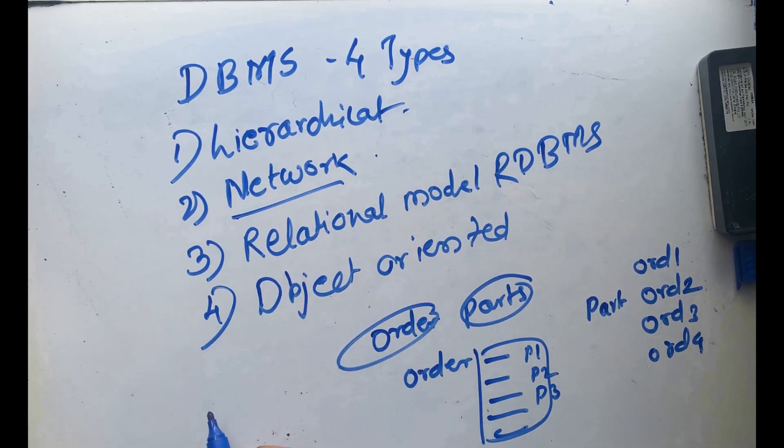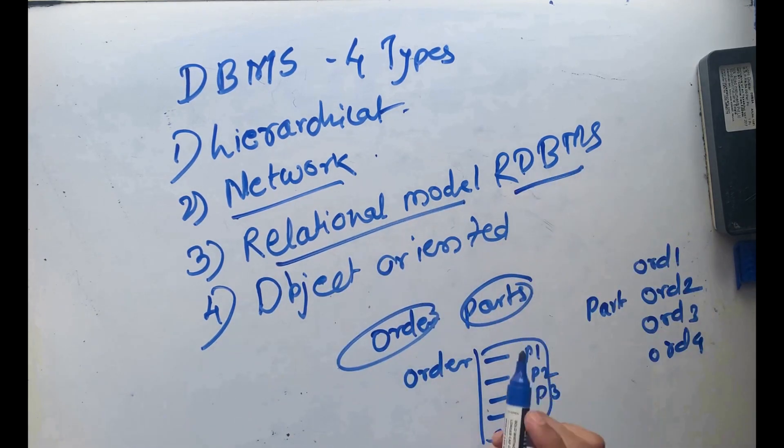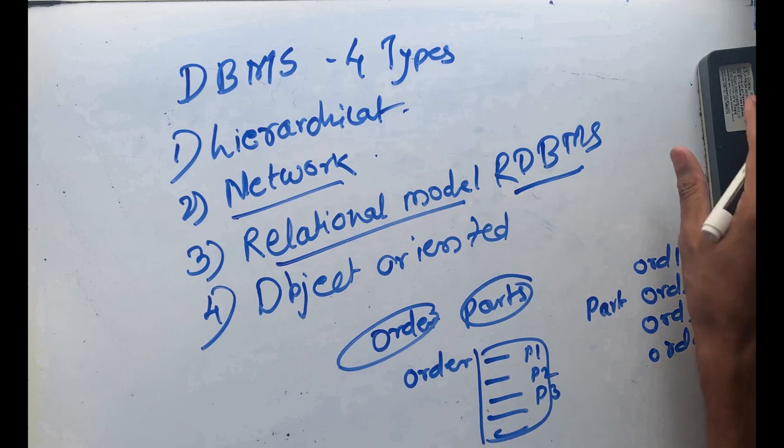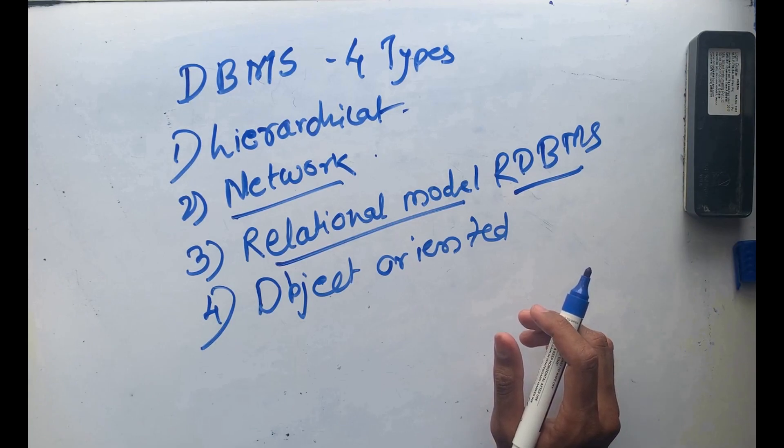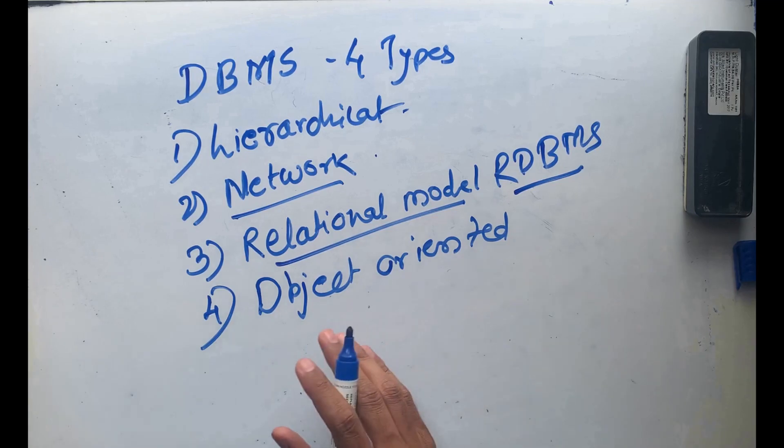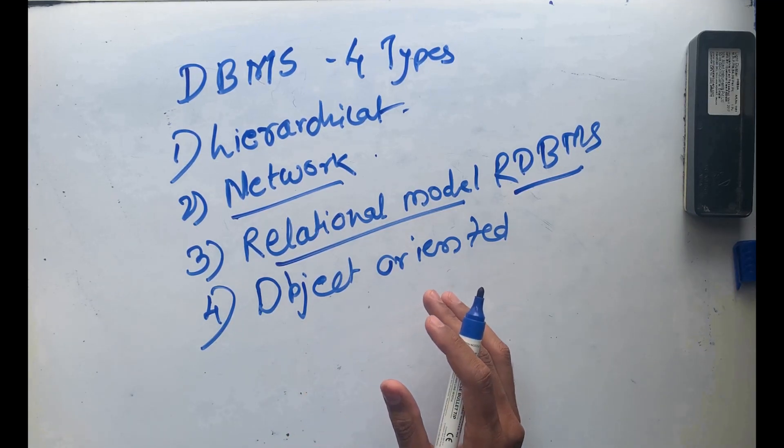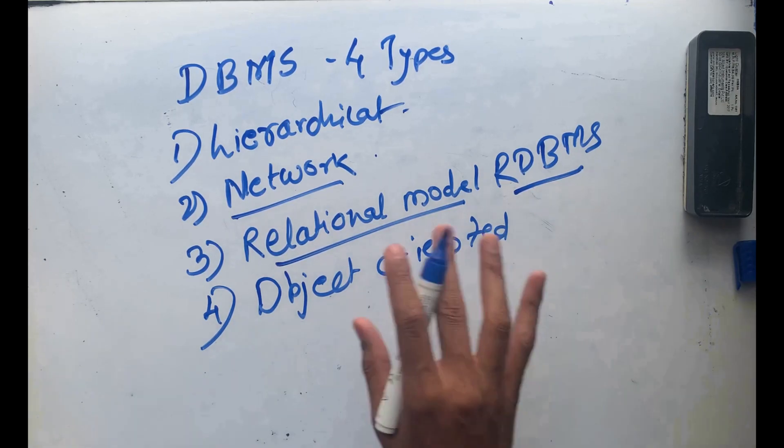Then there is relational model. In DBMS, relational model is very popular and we can call it RDBMS as well. Why is it popular? Because it is simple and most widely used. One more thing - it normalizes the data in rows and columns. Relational model is stored in fixed structure and manipulated using SQL language.